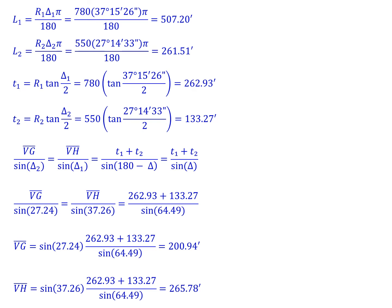Similarly for the distance VH, that's the sine of 37.26 degrees multiplied by 262.93 plus 133.27 divided by the sine of 64.49, giving us a length of 265.78.